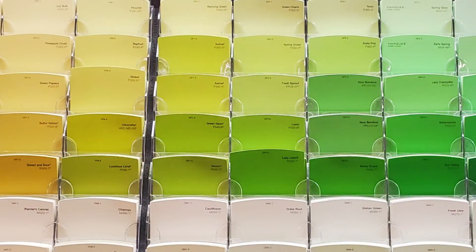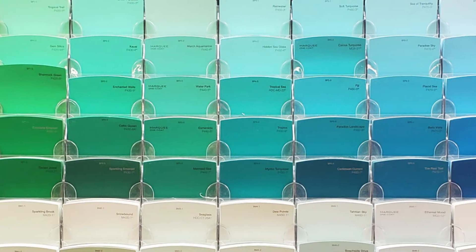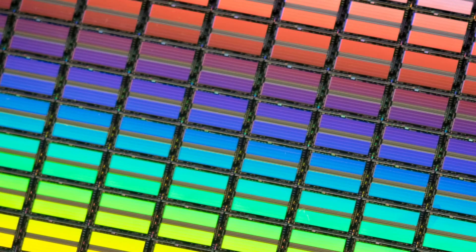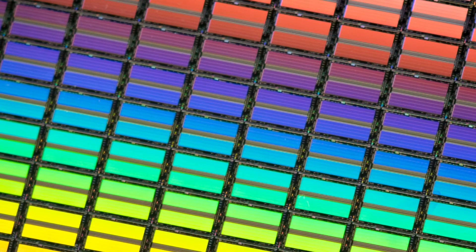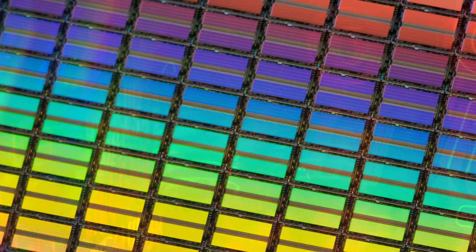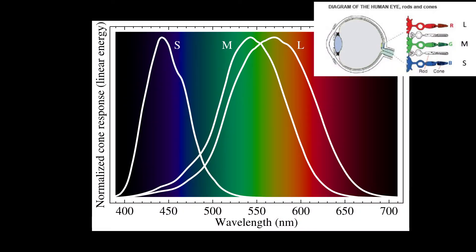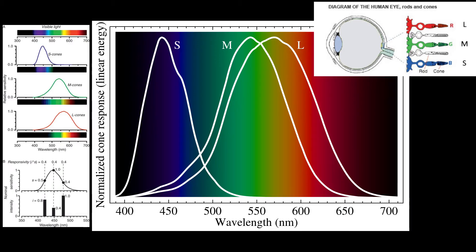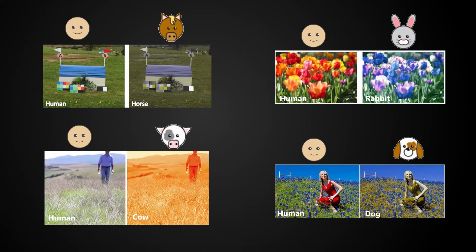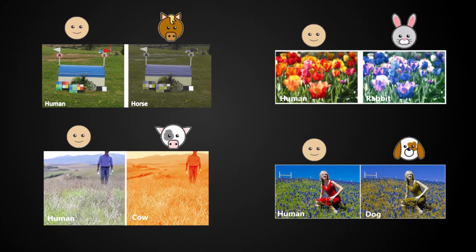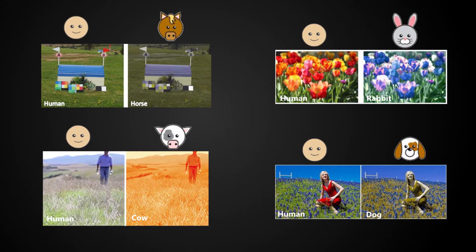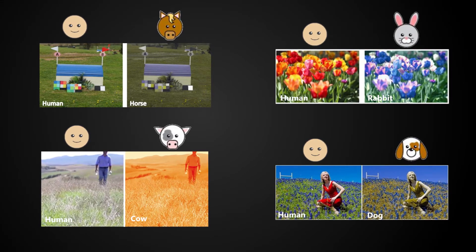It's amazing how many colors humans can perceive. Every color you can think of is a mixture of red, green, and blue light. That's because our eyes are photosensitive to only red, green, and blue light. Limited as that may sound, we can see more about the world around us than most mammals.